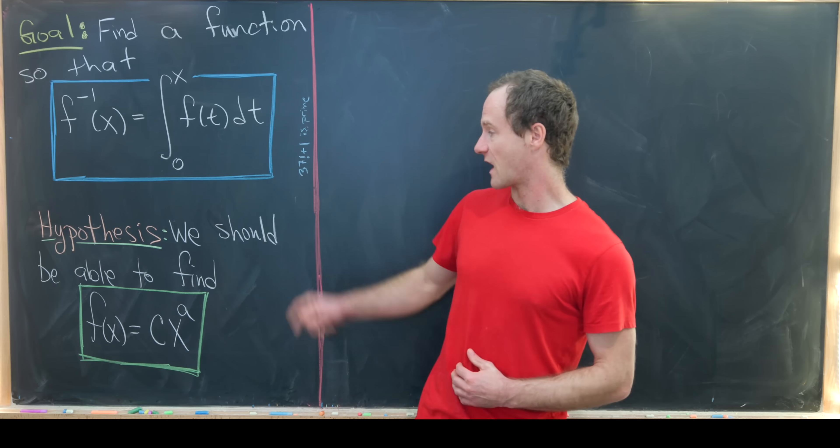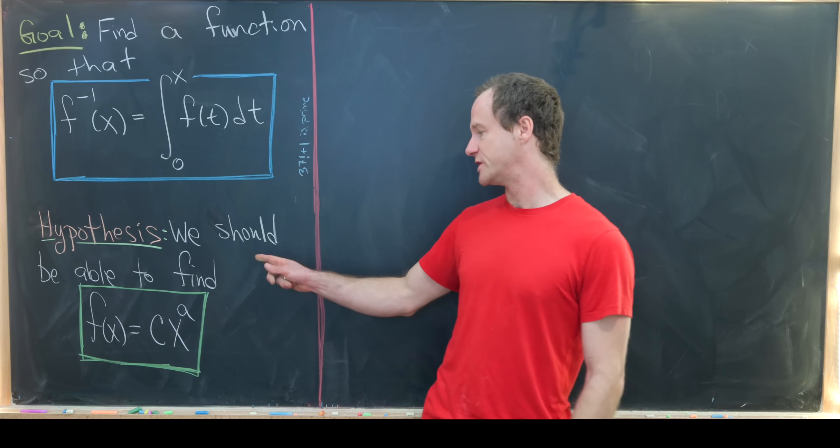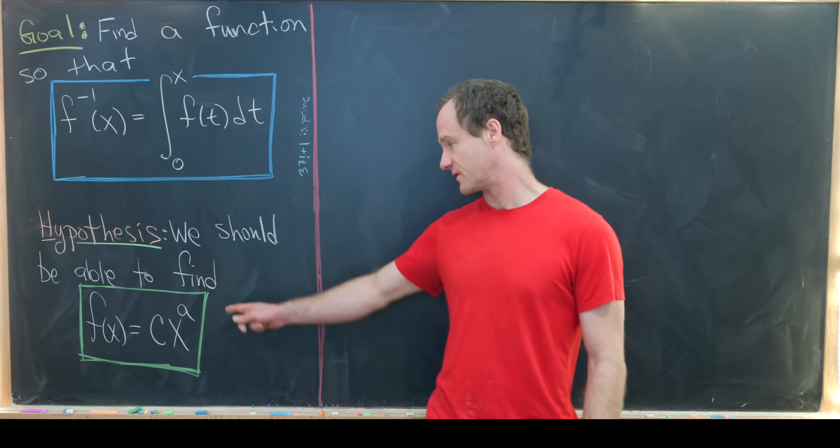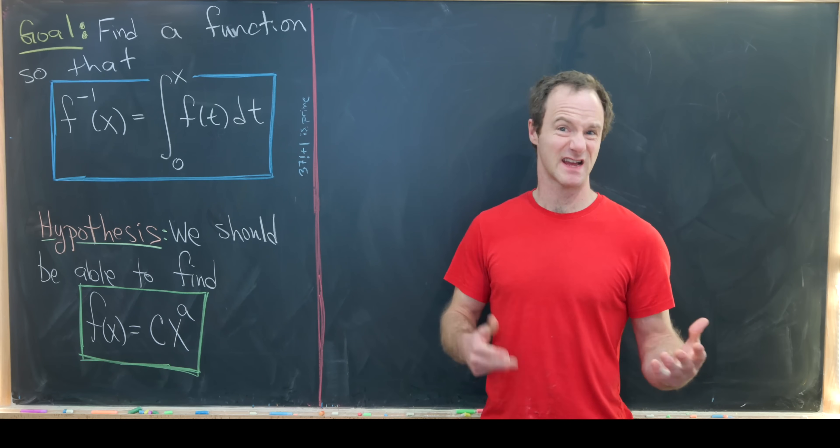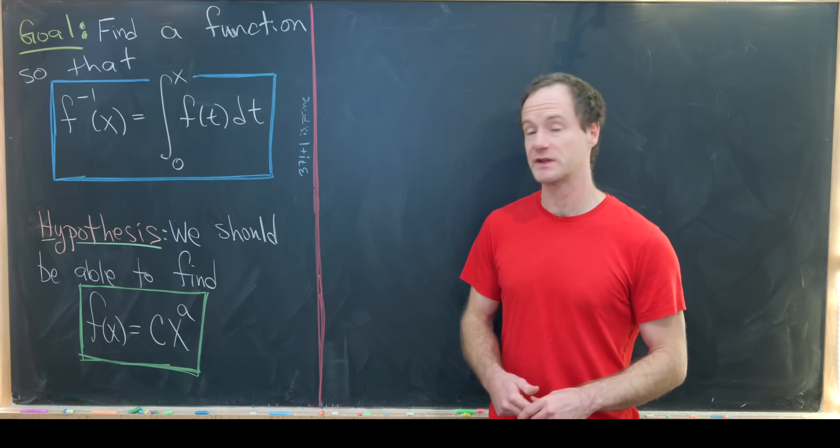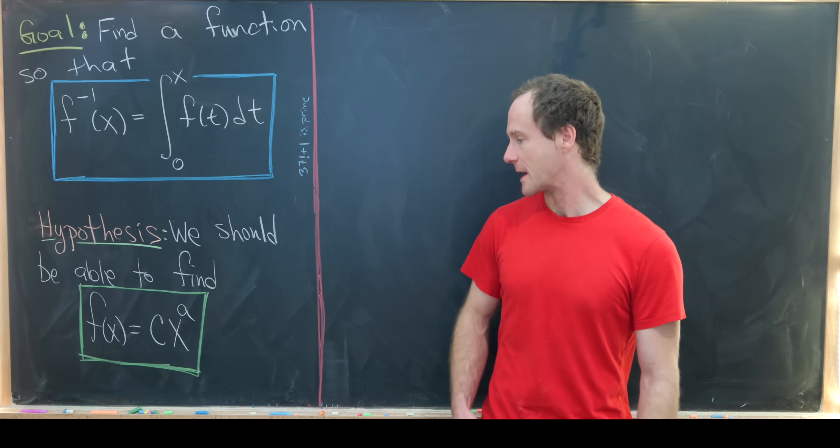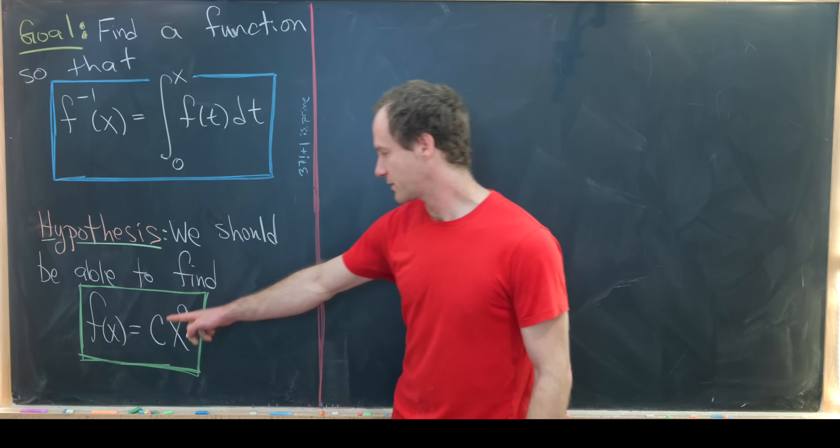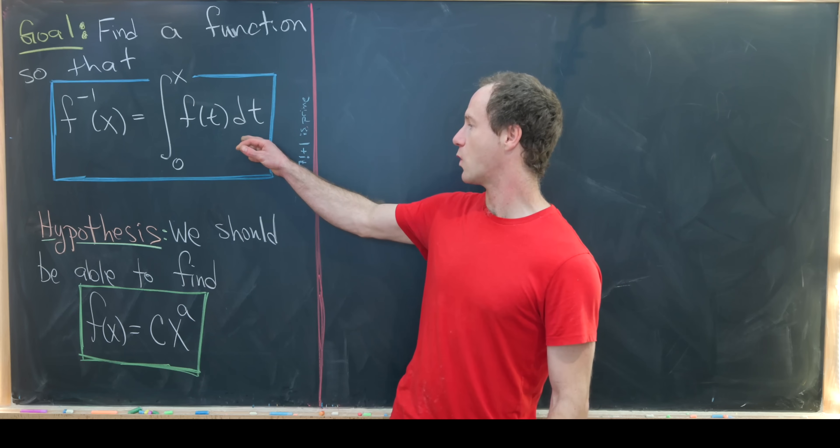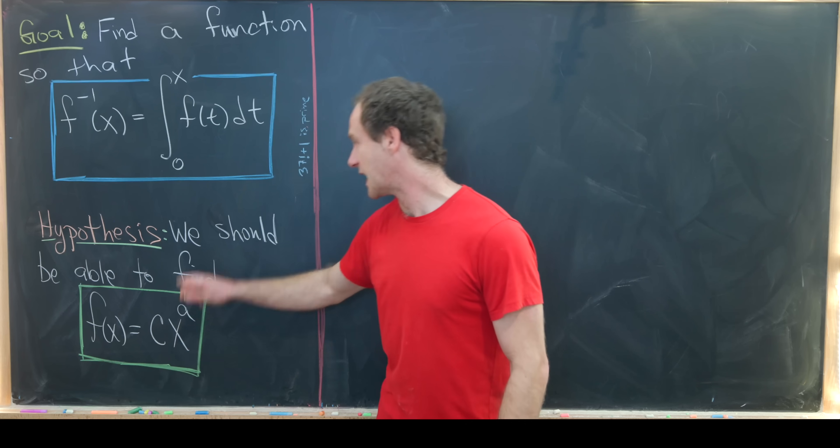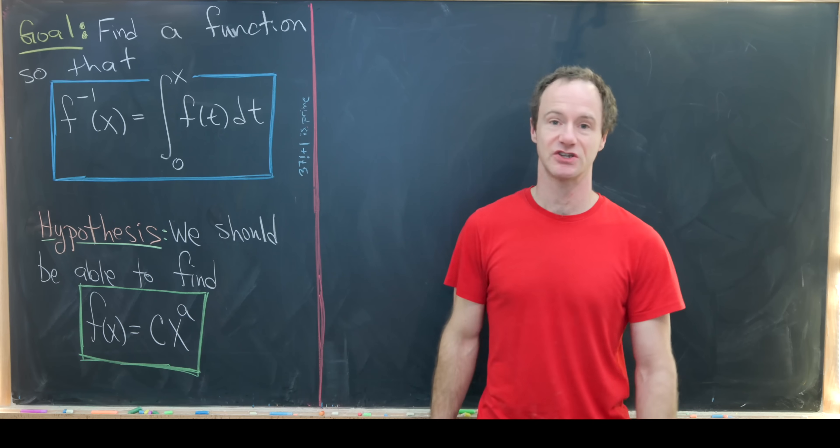We'll start with the hypothesis that we should be able to find a function of the following form. People are often off-put by this kind of guessing, but truth be told it's pretty common. We're starting with a function of the form c times x to the a, and we'll build an equation for c and a out of this condition.